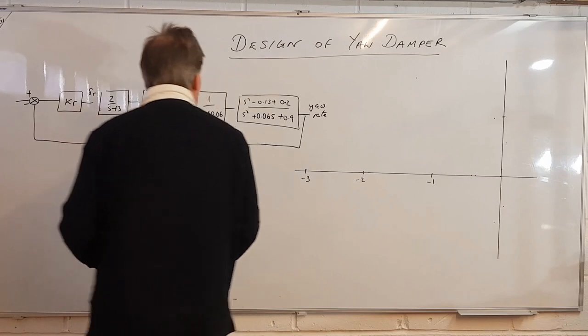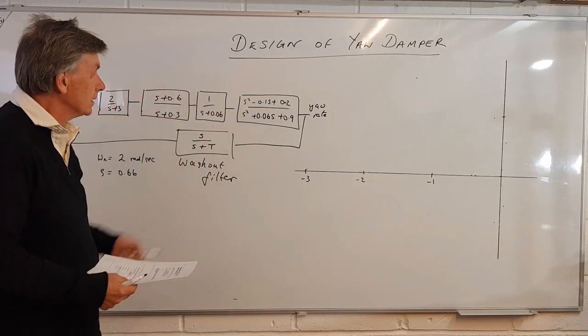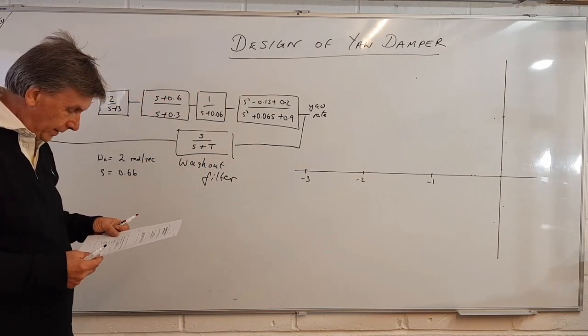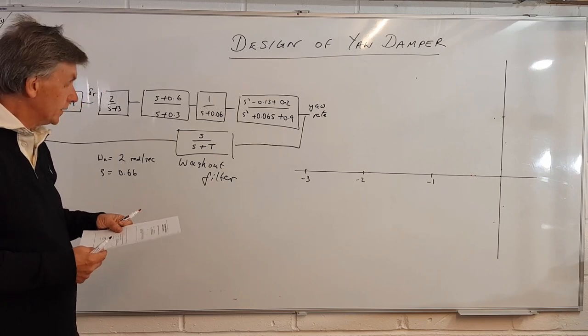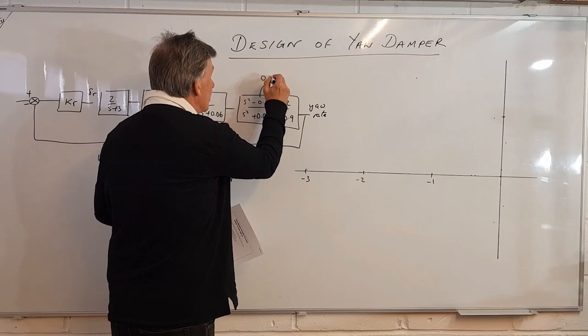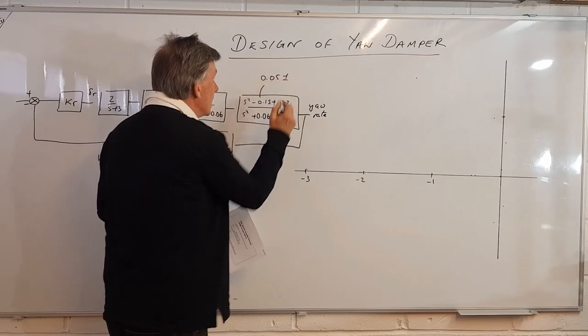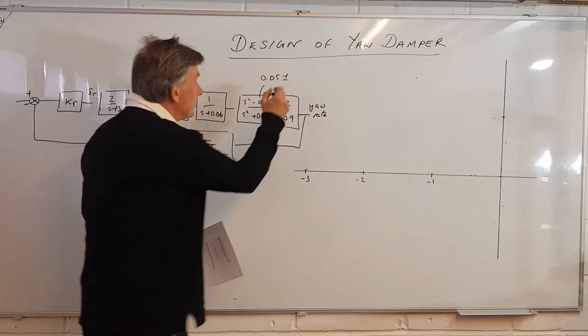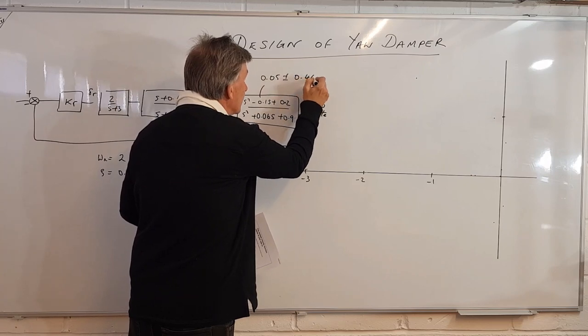So we have to solve now this one here using minus b plus or minus the square root of b squared minus 4ac over 2a. This one comes out as 0.05 plus or minus 0.44j.